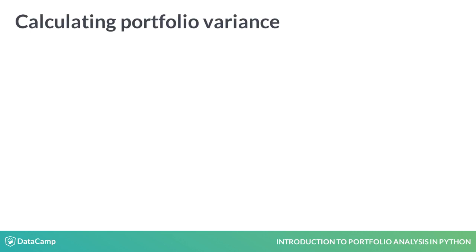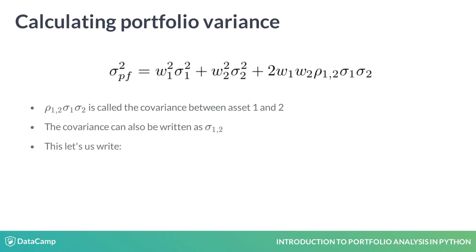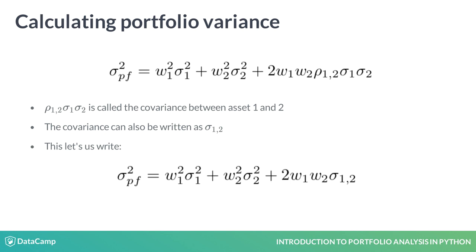Suppose I calculate the variance of a portfolio with two stocks. The portfolio variance is calculated by taking the weights times the variances sigma 1 and sigma 2 for stock 1 and 2 respectively. I need to add a term to account for correlation between the stocks, and that's why I multiply w1, w2, rho the correlation coefficient, and the variances sigma 1 and sigma 2. This last term is actually what we call the covariance.